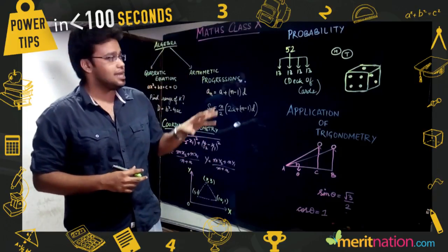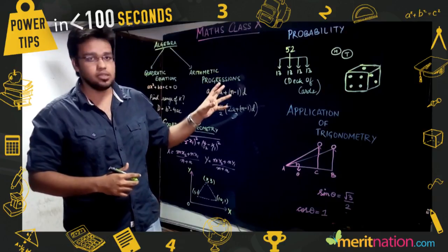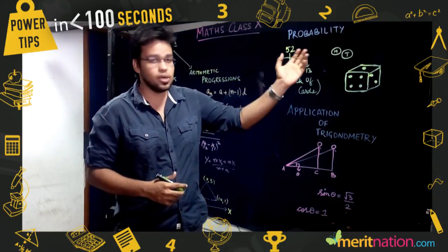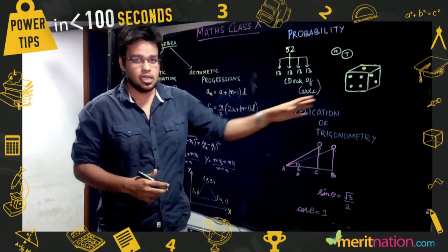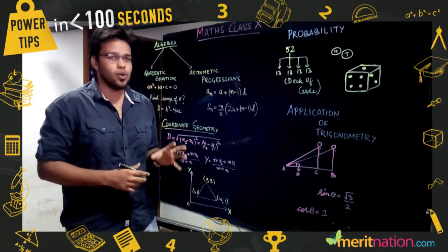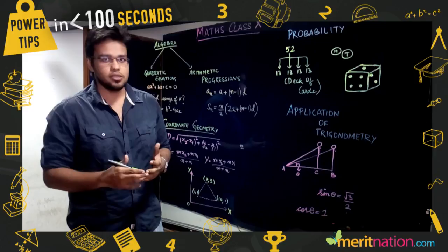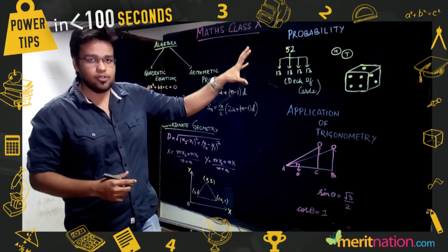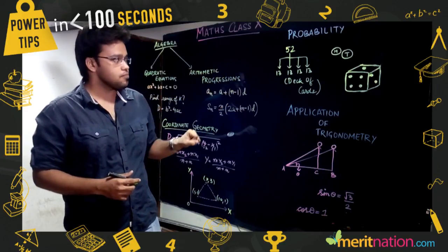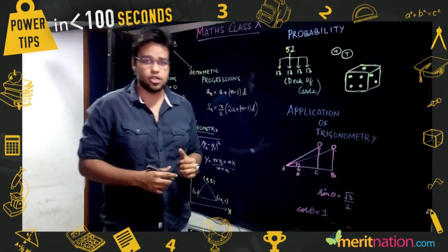For the past few years, questions in Probability come from three parts: one is a deck of cards, another is coins or dice, and one more type of question is based on numbers and alphabets. Please read the question very carefully in Probability before attempting.